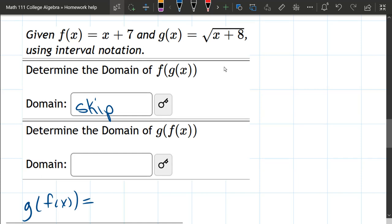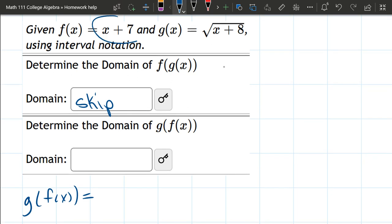So we have a domain composition question here, and what we're going to do is always go inside to outside. First thing I'm going to do is replace f by its expression, which is x plus 7.